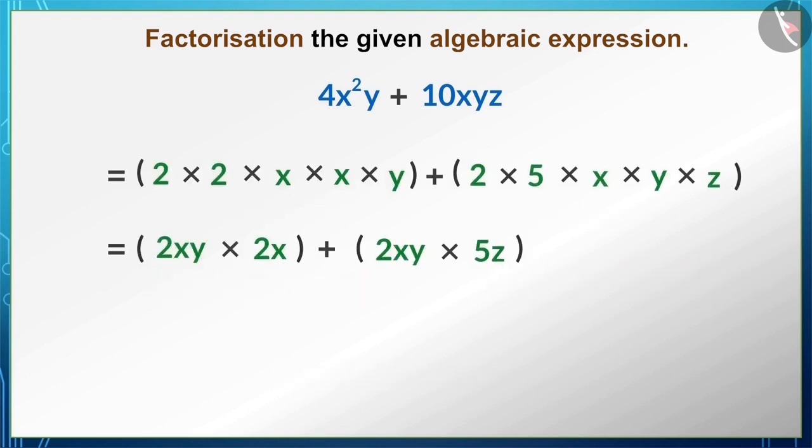Hence the expressions 2xy and (2x + 5z) are factors of 4x²y + 10xyz. Wasn't that easy?